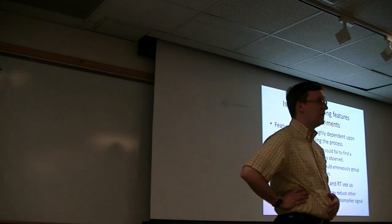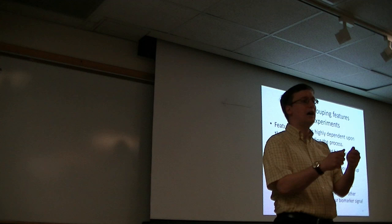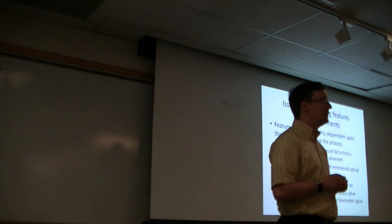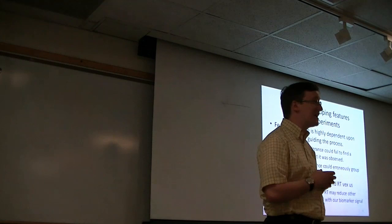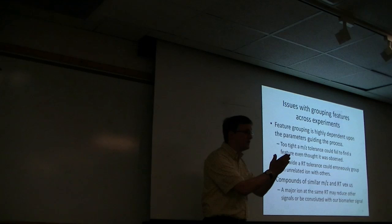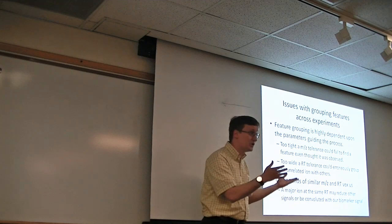When we try to group features across experiments, we have to be very careful about how we parameterize that operation. The first is M over Z tolerance. If you have an instrument that the manufacturer claims can do 10 ppm measurements of ions, and you simply read the book and say it says it can do 10 ppm, so I'm going to require all precursors to fall within 10 ppm, you're probably going to overestimate the actual performance of the instrument in terms of mass accuracy. You can't set that too tight, because otherwise, you may allow some readings of this feature to be left out.